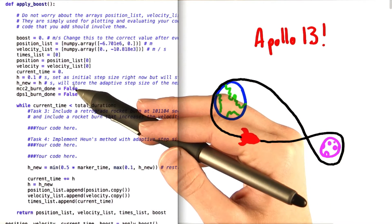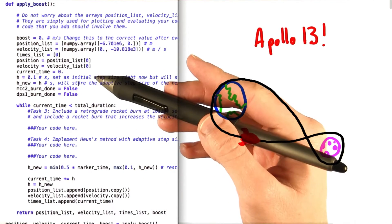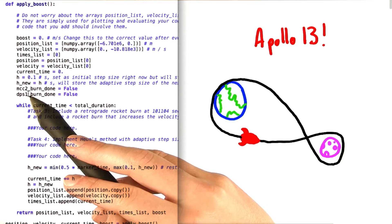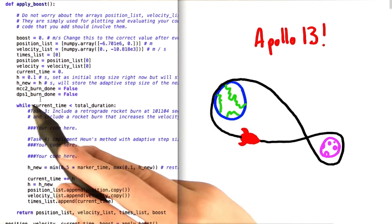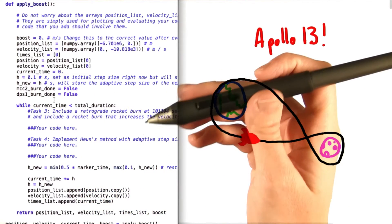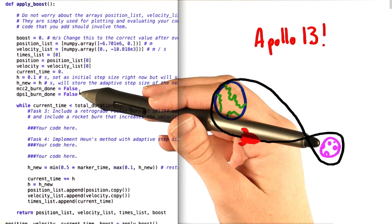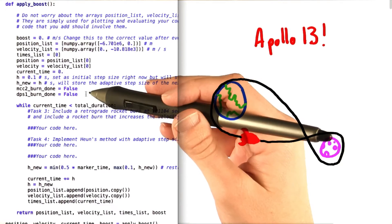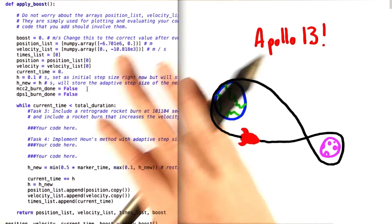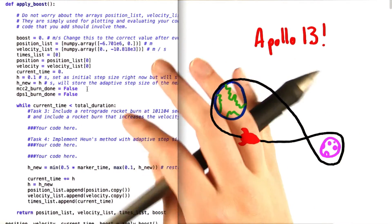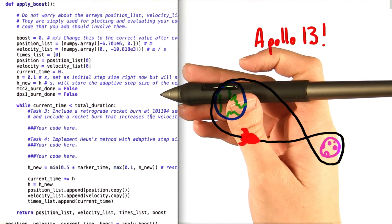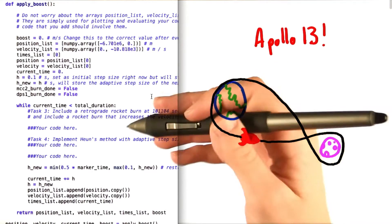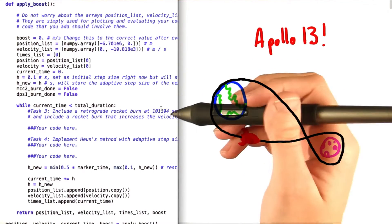Similarly, we have a second variable which refers to the descent propulsion system, or DPS, and this represents the second change in velocity. Now, the amount by which you are going to change the velocity at this point is what we're going to call the variable boost. Now, at these two moments, remember that we want to change just the magnitude of the velocity. We don't want to mess with the direction at all. That will deal with itself. So your third task is going to be to include these two velocity shifts, and of course, include them at the right times, which are listed in the code.